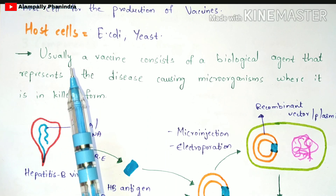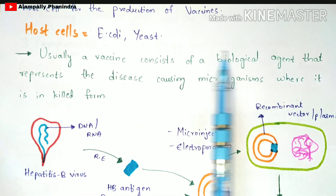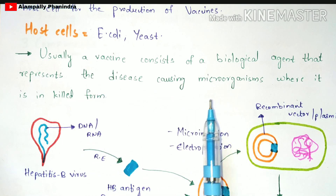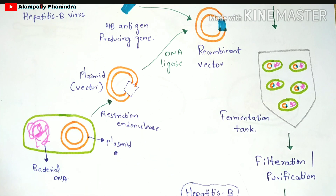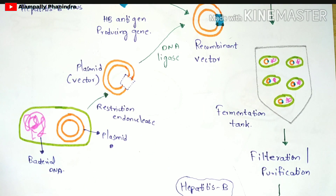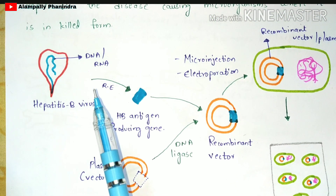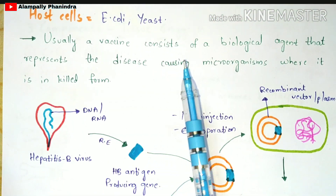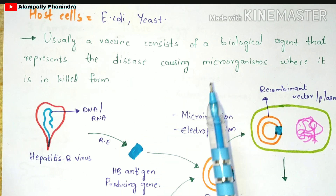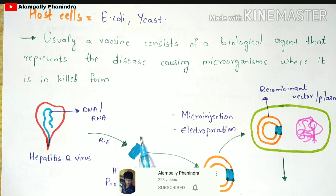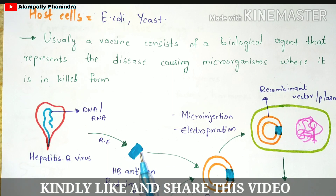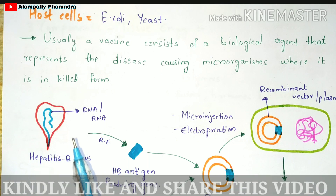Now coming back to the definition: a vaccine consists of a biological agent that represents the disease-causing microorganisms. The particular type of virus forms a particular type of vaccine. The vaccine consists of a gene obtained only from that specific virus — for example, the hepatitis B vaccine contains the HB antigen producing gene from hepatitis B virus. That biological agent is this gene, which is responsible for curing the virus present in the patient.